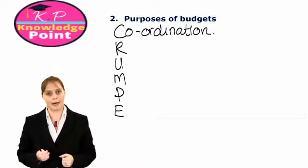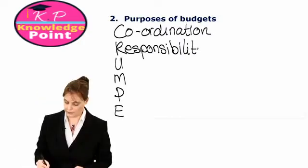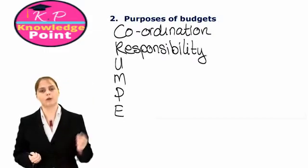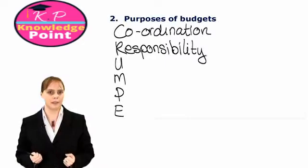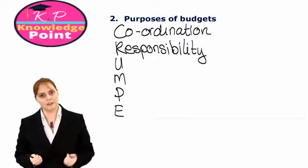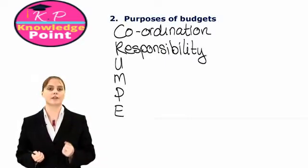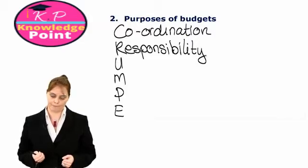The second purpose of the budgeting process is responsibility. The sales manager, for example, would have responsibility for producing the sales budget. They are then also responsible for coordinating the activities of the sales department in order to achieve the sales target set at the start of the year.